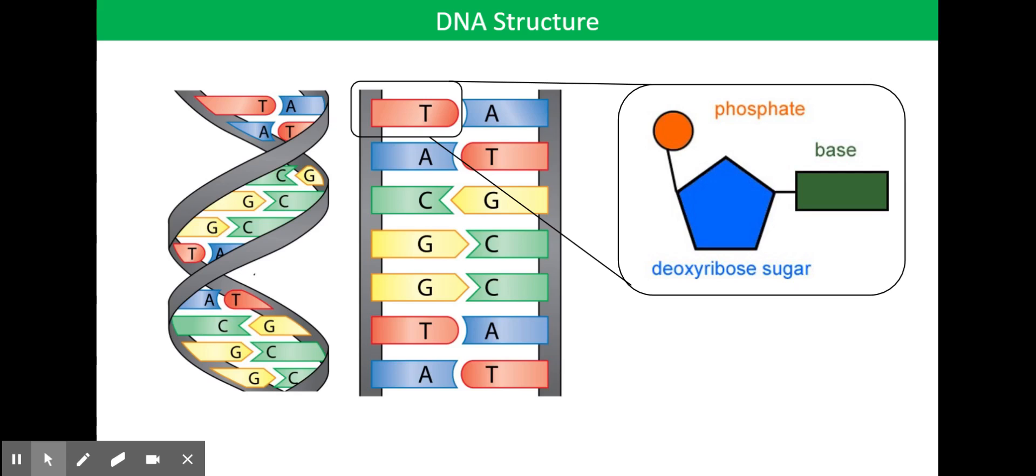And it looks a little bit like a ladder where the rungs of the ladder, so that's what you climb up, what you hold with your hands and you climb up with your feet. And that's where all our bases appear. So we've got thymine T always pairing with adenine A and cytosine C always pairing with guanine G.